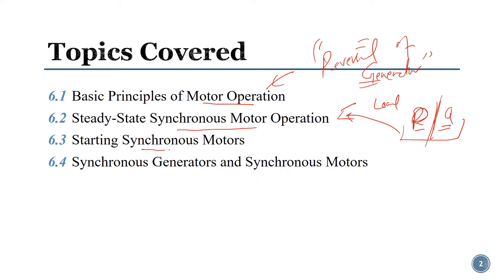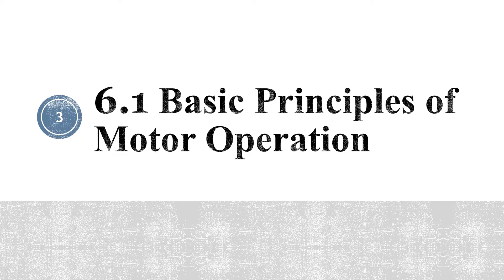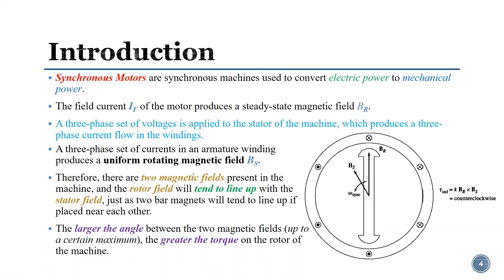We will also cover how to actually start the synchronous motor. In the first part of the lecture we will cover the first two parts, and in the second part we will summarize the differences between generators and motors. Starting with the basic principle: the configuration is similar — you have a stator, which in motor literature is also called the armature. Most of the time when referring to the motor, we use the term 'armature' rather than 'stator'.